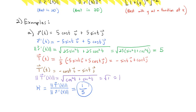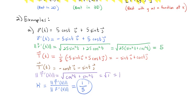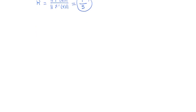It turns out the curvature is constant because this entire shape is a circle — a circle of radius 5. So it curves at a rate of 1/5 all the way around the entire graph. But that's just a 2D example; let's take a look at an example in 3D.